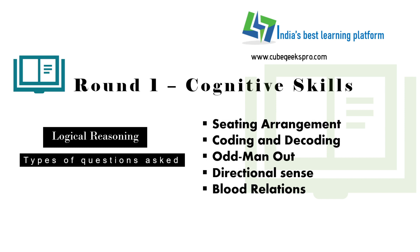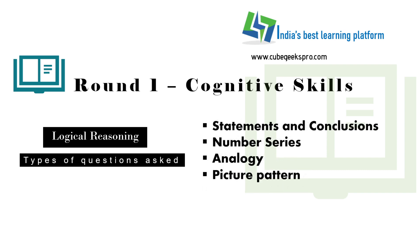Let's talk about the logical reasoning section in the TCS exam. In logical reasoning, questions can be asked on sitting arrangement, coding and decoding, odd man out, directional sense, blood relations, statements and conclusions, number series, analogy and picture patterns.